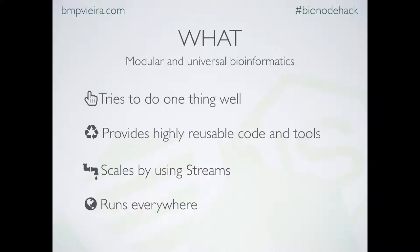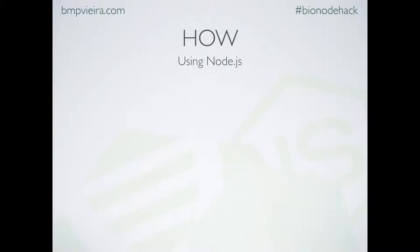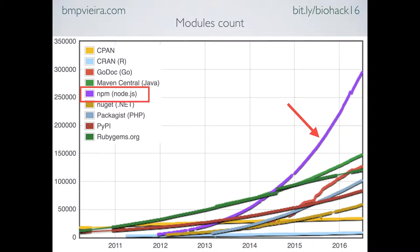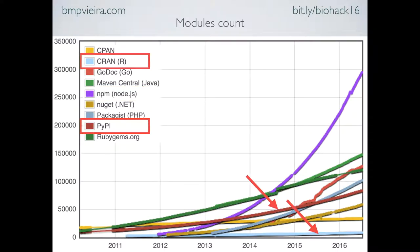It would be surprising how much time scientists waste trying to get their software to work on different machines. To address this, we're using Node.js because it maps to what we're trying to achieve. Node.js is highly modular with a very open community on GitHub, and the number of Node.js modules published is growing exponentially — interesting compared with languages more popular in biology like R or Python. Even though Node.js is growing a lot, it still has to catch up in biology.